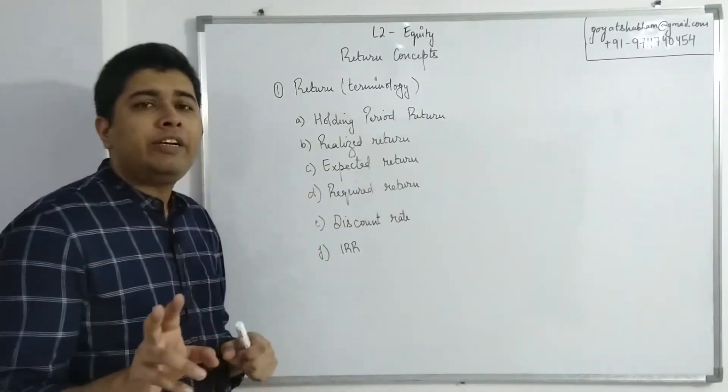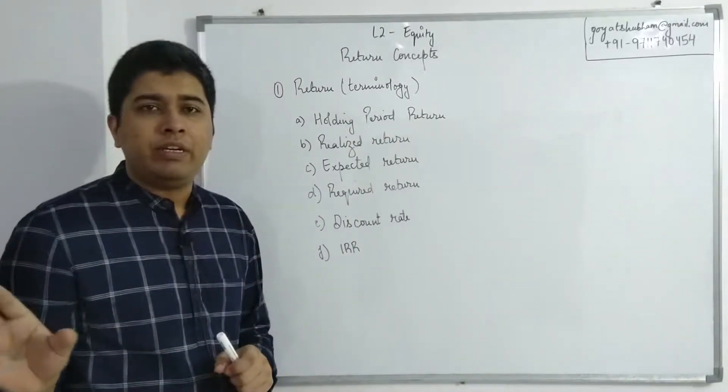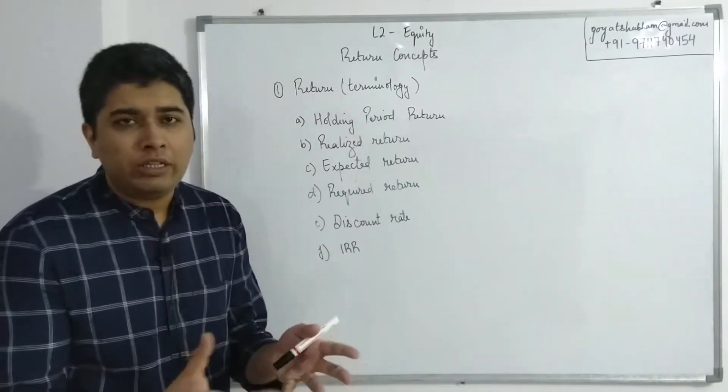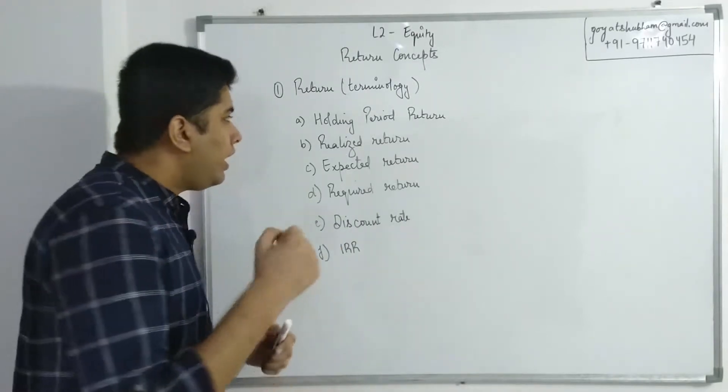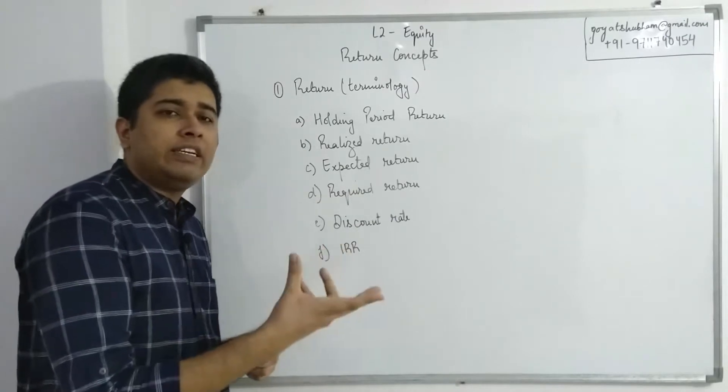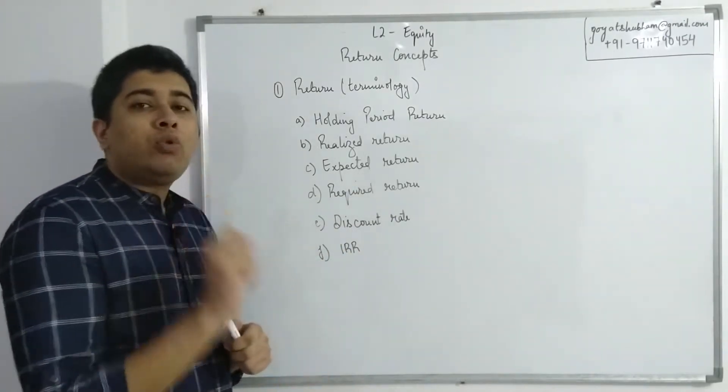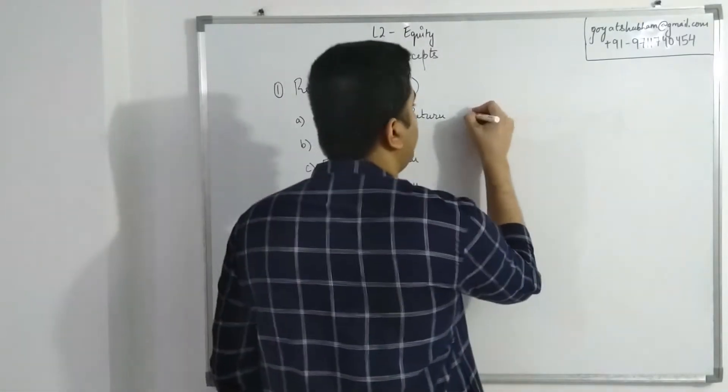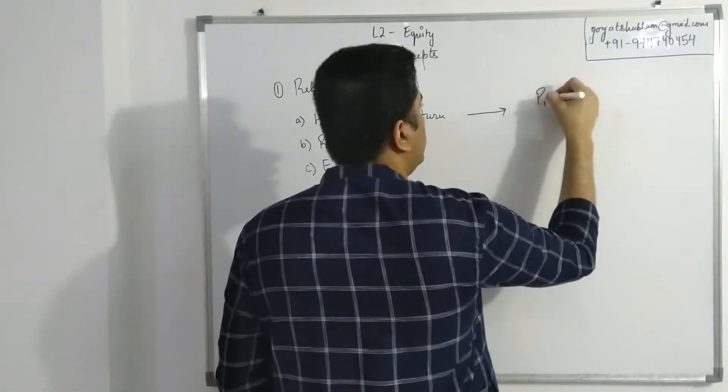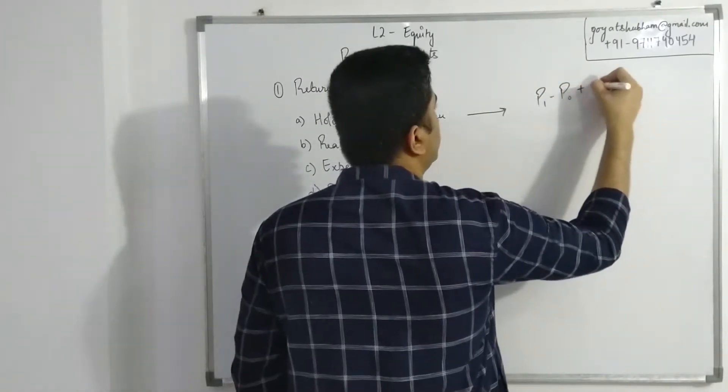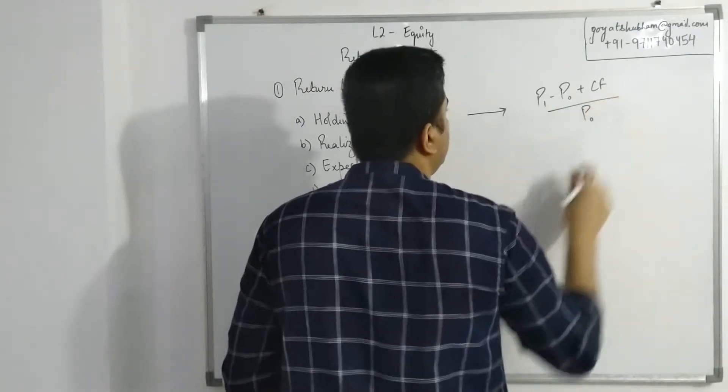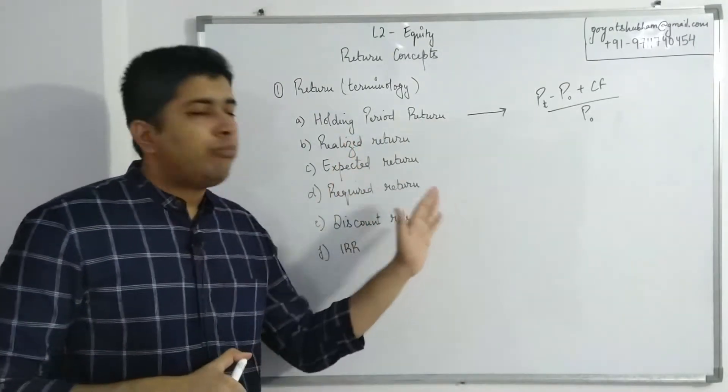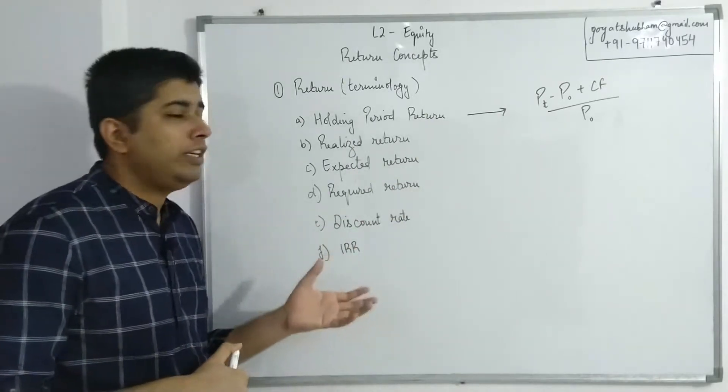Holding period return is a very basic simple concept. If an investor is holding on to a security for a certain amount of time, that time could be anything - one day, one month, 10 years, anything. Whatever total return he has in that certain duration is known as holding period return. So the formula goes something like this: P_t minus P_0 plus cash flows divided by P_0.